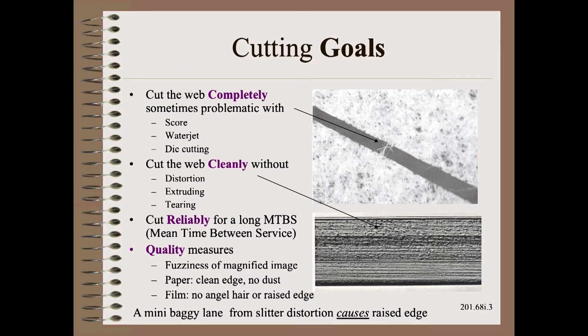There are three goals that almost any cutting operation must satisfy. First, you must cut the web completely, which is a given for most cutting methods. Second, you must cut the web cleanly, where a quality measure is very material and customer dependent. Finally, you must cut the web reliably, such as measured by mean time between service, as industrial engineers would call it, or hours between blade changes, as an operator might call it.